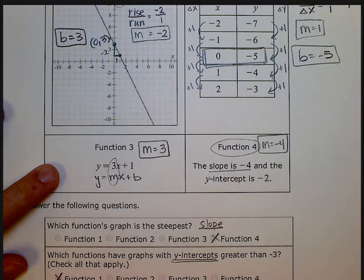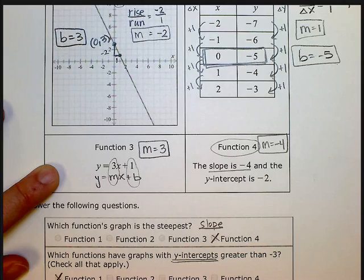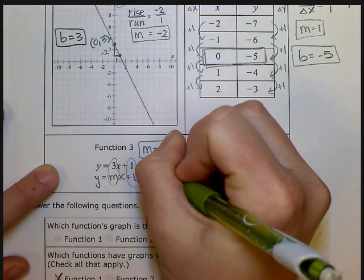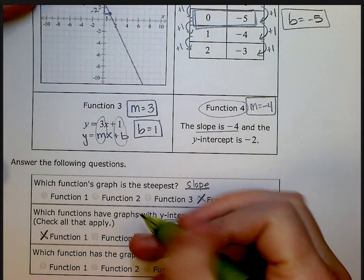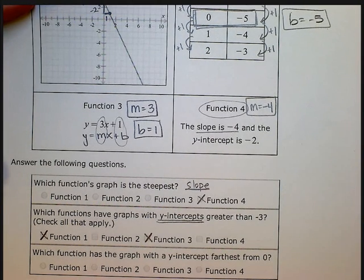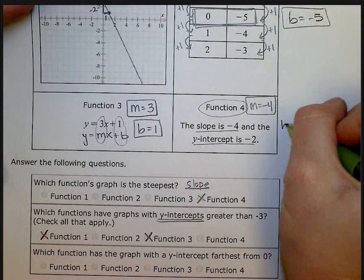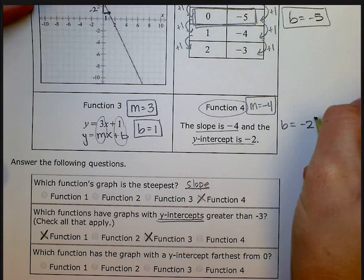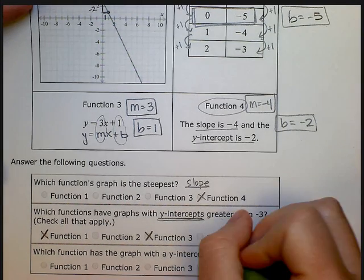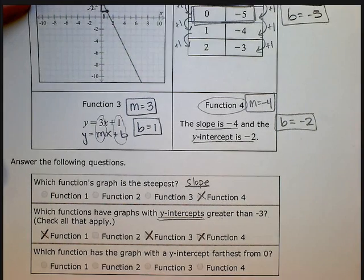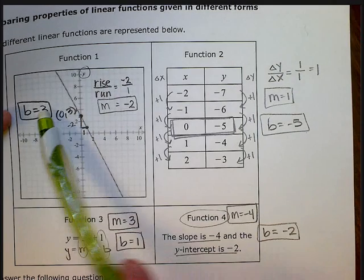Function 3. Again, y equals mx plus b. We can see our y-intercept right there. Our y-intercept on this function is 1. So is 1 greater than negative 3? Yes, it is. So I can go ahead and mark this function. And last but not least, this one tells us what the intercept is. So the intercept of function 4 is negative 2. Is negative 2 greater than negative 3? It actually is. So function 4 also is true. So every function except for 2, in this case, has an intercept greater than negative 3.